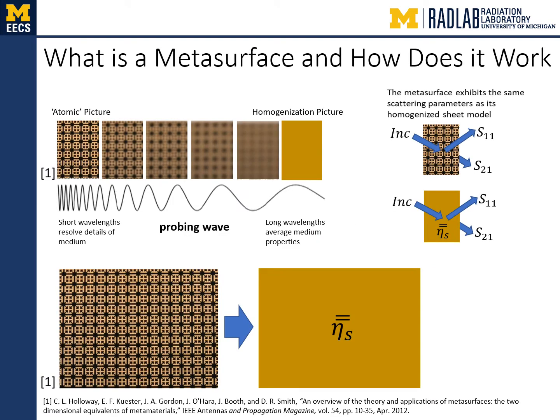Metasurfaces are subwavelength arrays of polarizable particles. Since the spacing is subwavelength, the excitation does not vary across the dimensions of an individual element. Furthermore, since the element dimensions are subwavelength, the particles operate in their quasi-static regime. These concepts allow the metasurface to be homogenizable, meaning the response of each particle can be averaged. The metasurface can then be described by a single tensor impedance relating the induced surface currents to the total electric fields. The key to the homogenization process is that both the metasurface and the homogenized model share the same scattering parameters. Thus, rather than working with the array of polarizable particles themselves, we can work with a simple sheet with a uniform tensor sheet impedance, which greatly simplifies the analytical or computational burden.